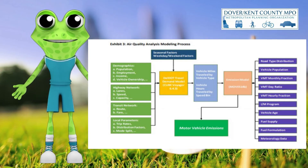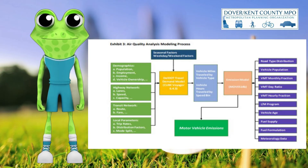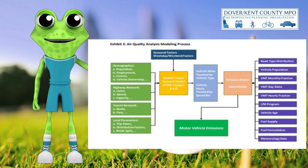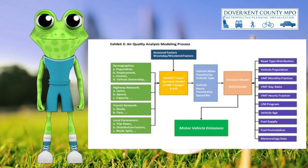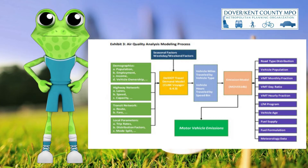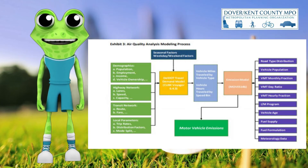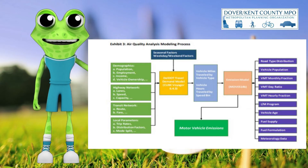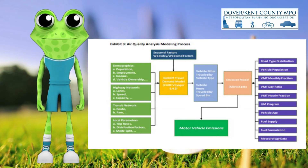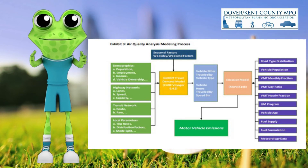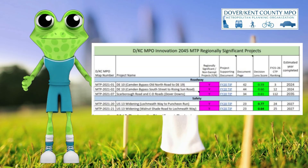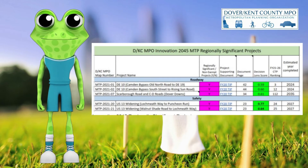In other words, the MTP projects, when considered collectively, need to contribute to the air quality improvement goals embodied in the Clean Air Act Amendment of 1990. To document this process, DelDOT consultants perform a series of tests with computer models that estimate air pollution levels from mobile sources over the next 25 years. Once the Dover-Kent MPO finds that the plan meets the regional air quality goals, federal agencies certify that the plan is in conformity — ensuring the MTP conforms to air quality improvement goals.